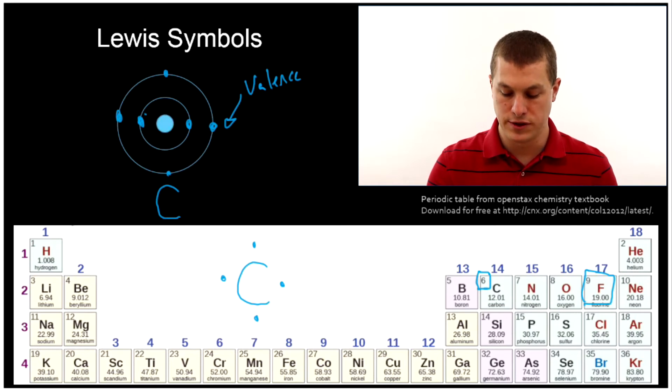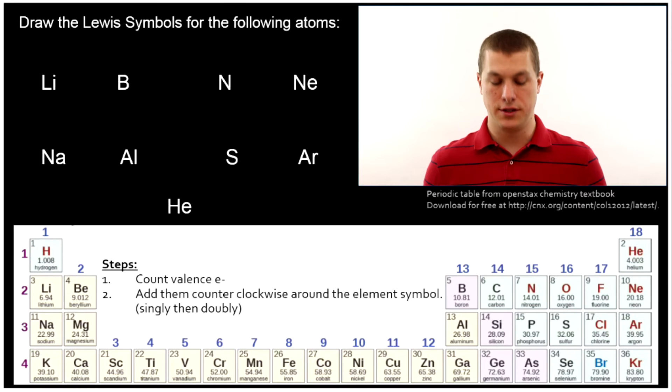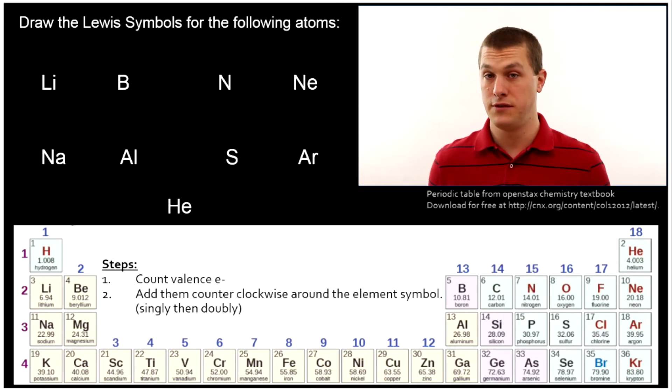All right now let's draw a bunch of Lewis symbols. So how do you do it? First you count up the valence electrons and then you just add them counterclockwise around the element symbol. First you add one electron on each side then you add two after that. How do you determine the number of valence electrons? Well it turns out it's really easy to do with a periodic table. So you can draw the electron configuration if you want you may have learned to do it that way and that's fine but it's very easy by the position on the periodic table to say how many valence electrons an atom has.